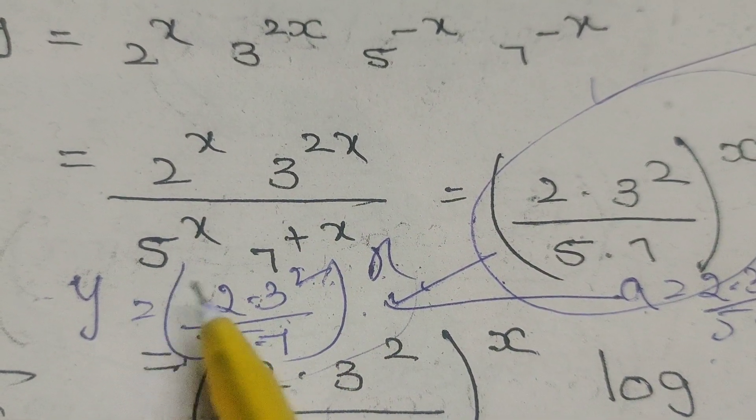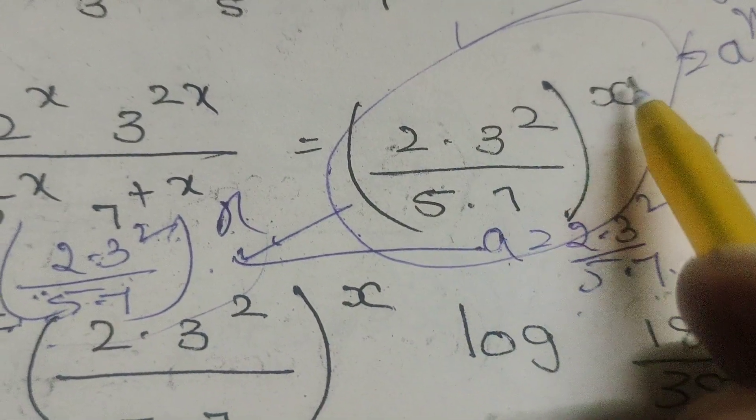Next, write 2 into 3 by 5 into 7 whole power x.